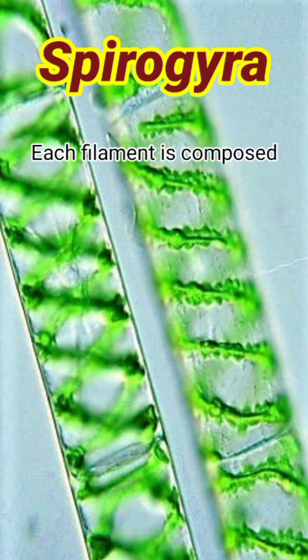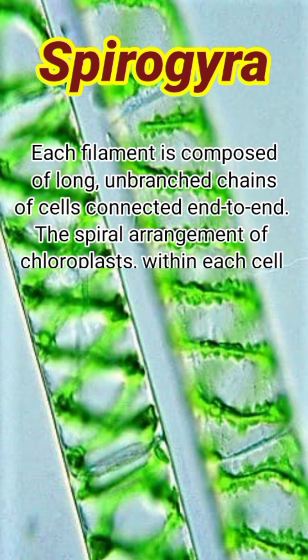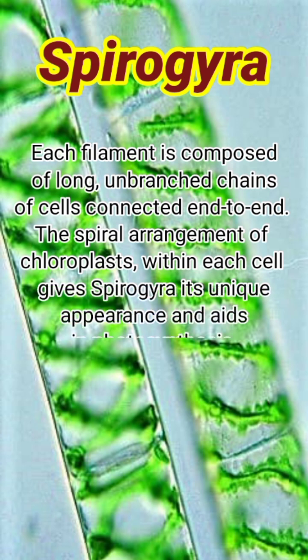Each filament is composed of long, unbranched chains of cells connected end to end. The spiral arrangement of chloroplasts within each cell gives Spirogyra its unique appearance and aids in photosynthesis.